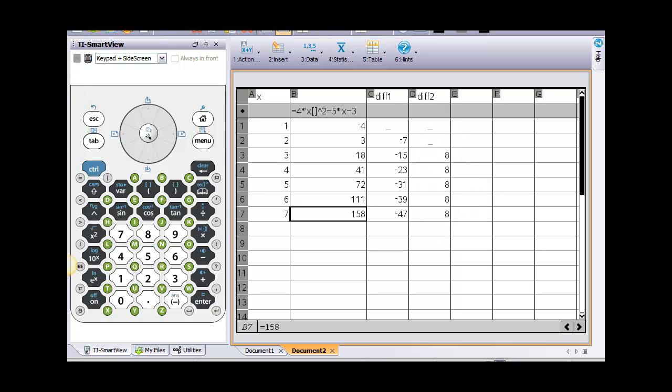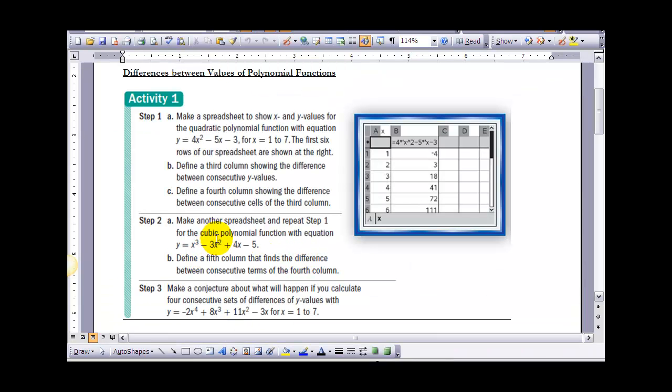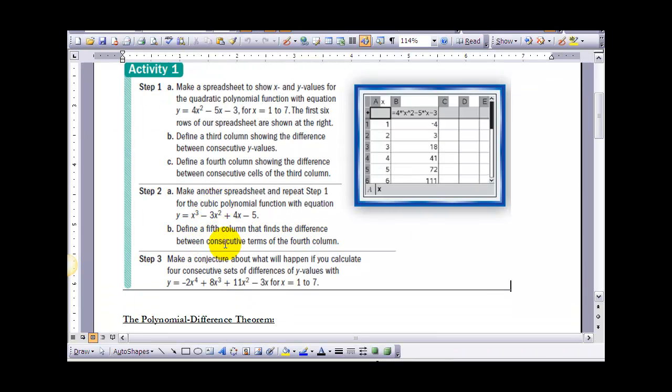And if I look at the other polynomial that we had, which was the third degree polynomial, you'll notice that they were equal at their third set of differences. So in terms of the last step there where it says make a conjecture, if we have a fourth degree polynomial, well, chances are pretty good that they would probably be equal at the fourth set of differences.